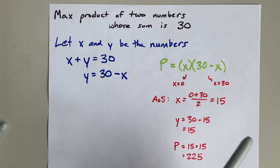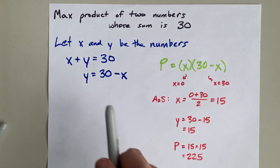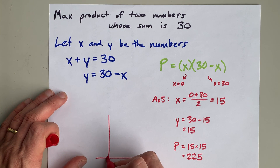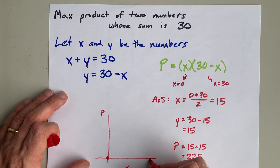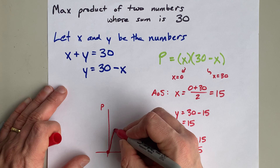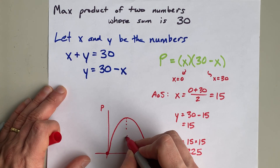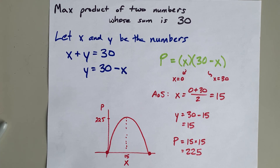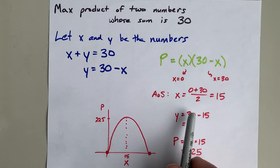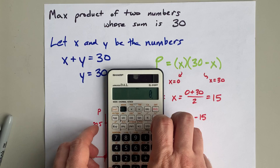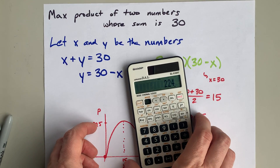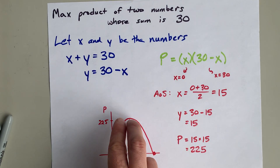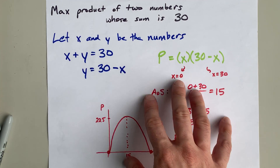I dare you to find two numbers that add to 30 that multiply to give more than 225 — you can't. If I were to graph this, you'd find that if x is zero the product is zero, and if x is 30 the product is also zero. The maximum is at x equals 15, and that maximum is 225. Just to demonstrate: if you chose x to be 14, then the other number is 16, and 14 times 16 is 224, which is less than 225. Every number you pick that isn't 15 is going to give you a product less than 225. The max product is 225.